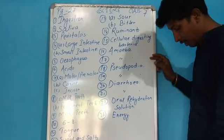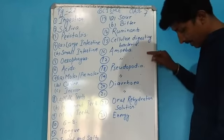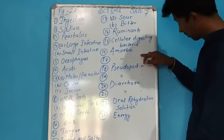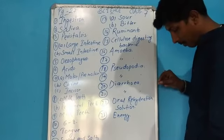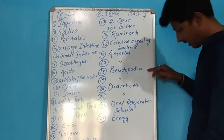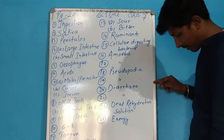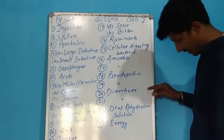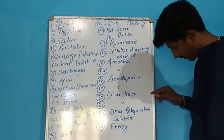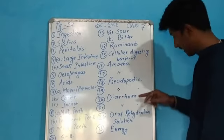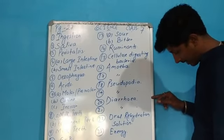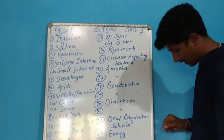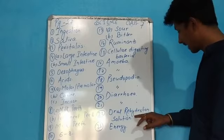Number sixteen: which single-celled organism has pseudopodia? That is amoeba. Number seventeen: name a single-celled organism which constantly changes its shape. That is also amoeba. Number eighteen: what are the false feet of amoeba known as? That is pseudopodia. Number nineteen: name the parts of amoeba which help it in moving and also in capturing food. That is also pseudopodia. Number twenty: name the condition in which a person passes frequent watery stools. That is diarrhea. Number twenty-one: name one condition which can lead to dehydration of our body. That is also diarrhea. Number twenty-two: write the full form of ORS. Oral rehydration solution.